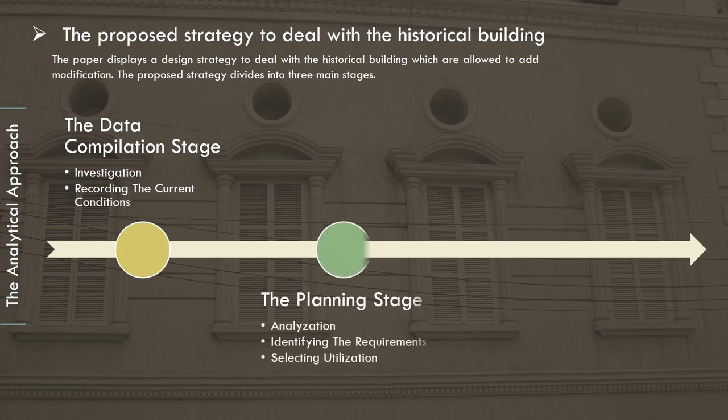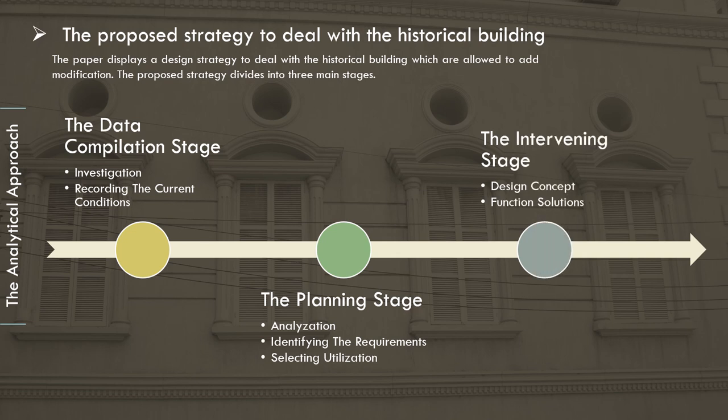In the planning stage, the building data documented in the previous stage is analyzed through sketches and drawings illustrating site analysis and the surrounding environment. Then the new project requirements are selected, and based on that, an appropriate sustainable use is chosen. In the intervening stage, the designer offers innovative solutions matching the project requirements and its surrounding environment, based on a philosophical concept that achieves integration between the historic architectural style and contemporary architecture.